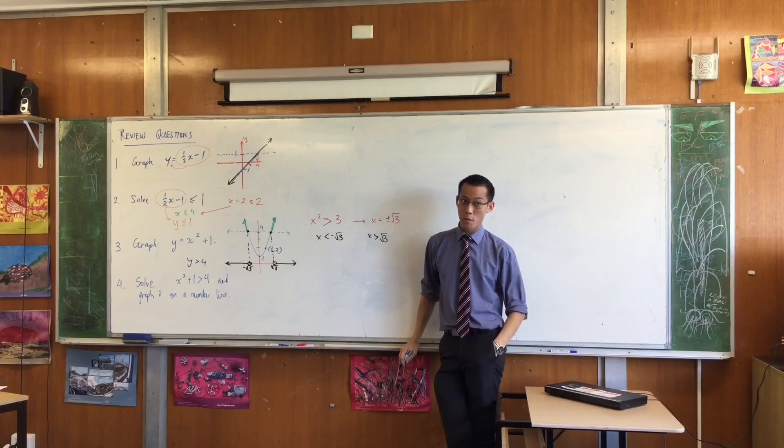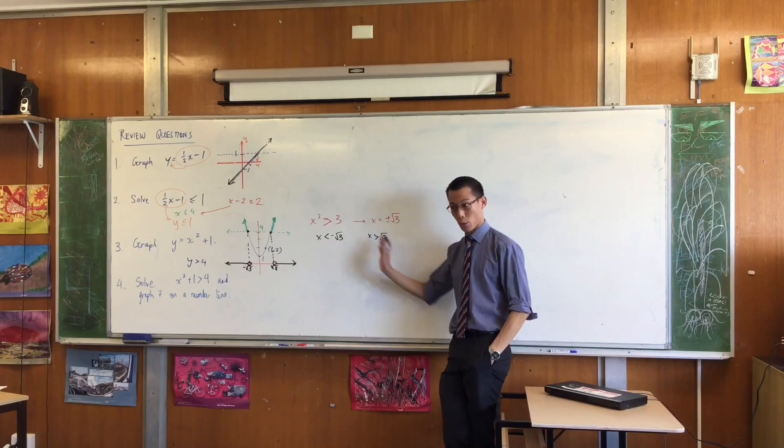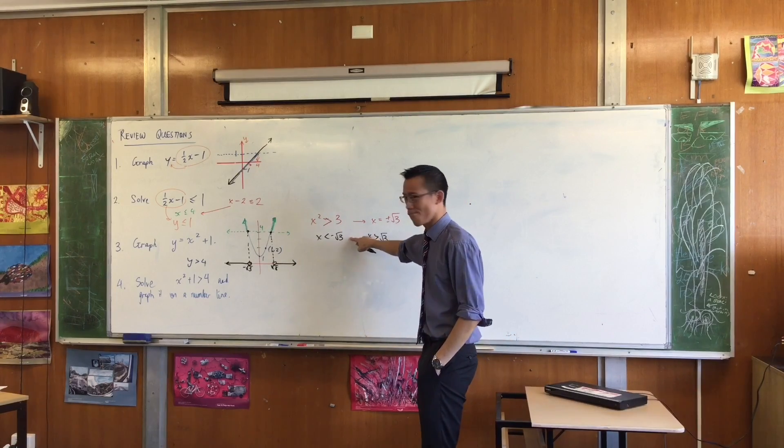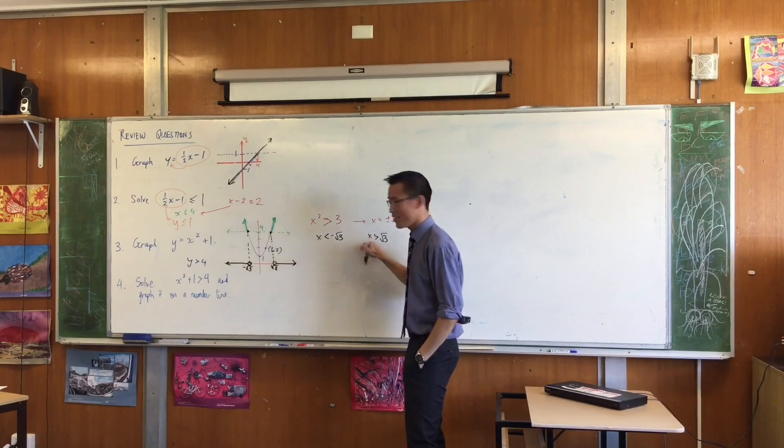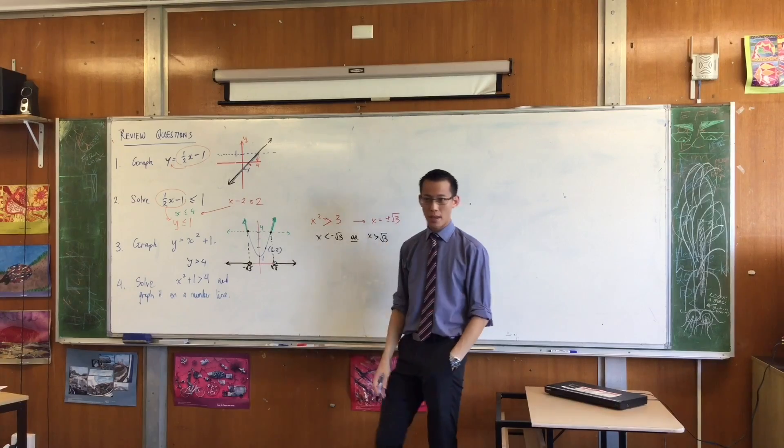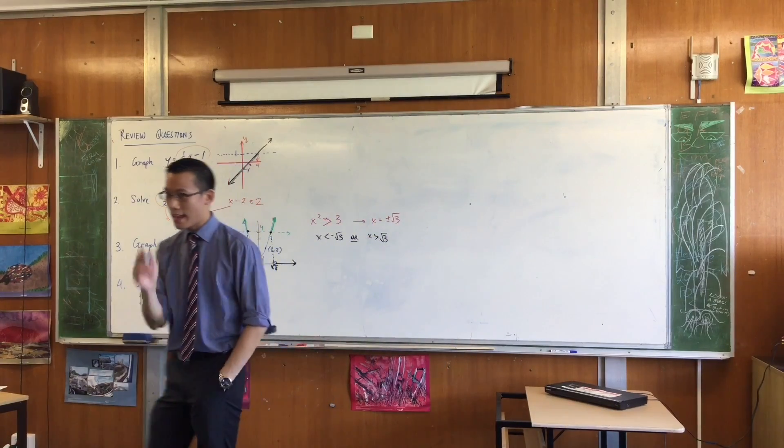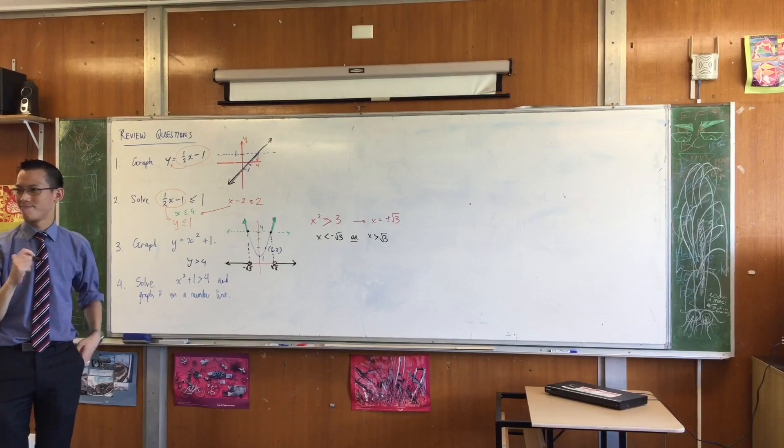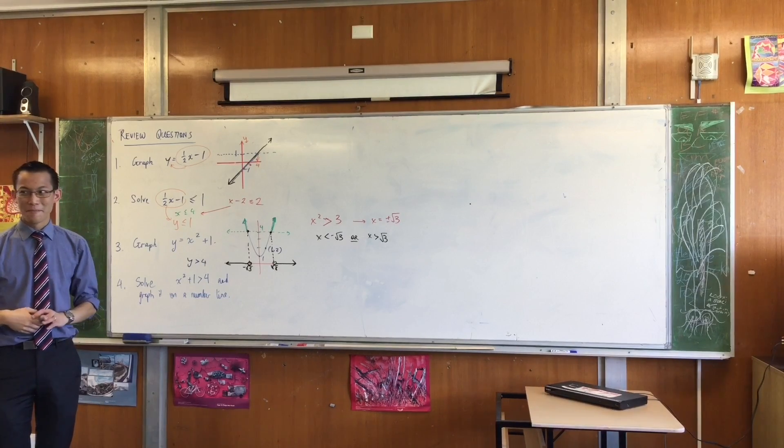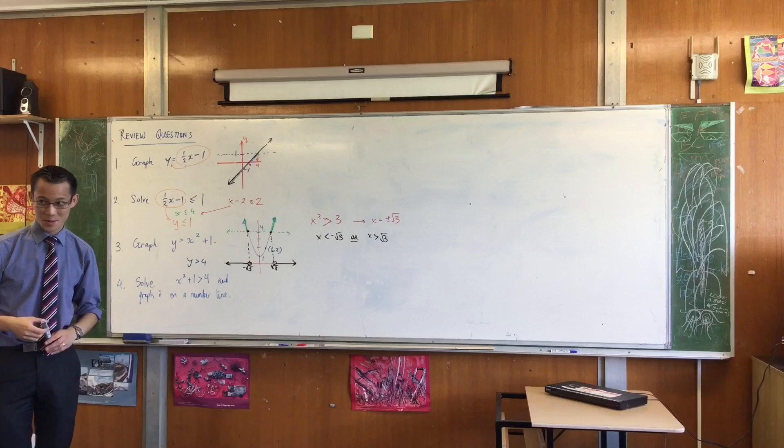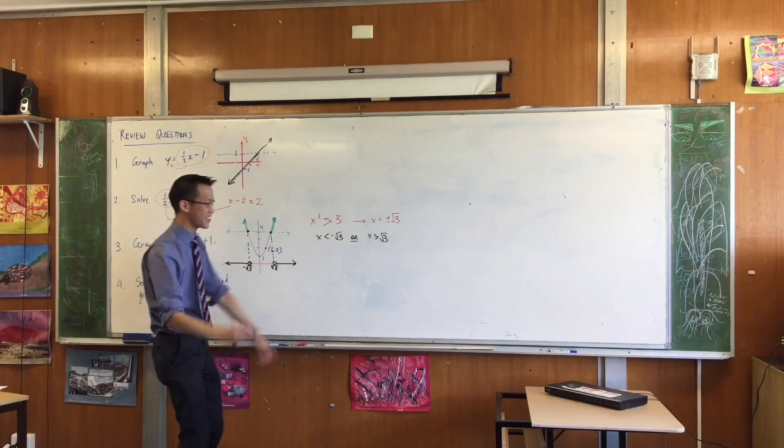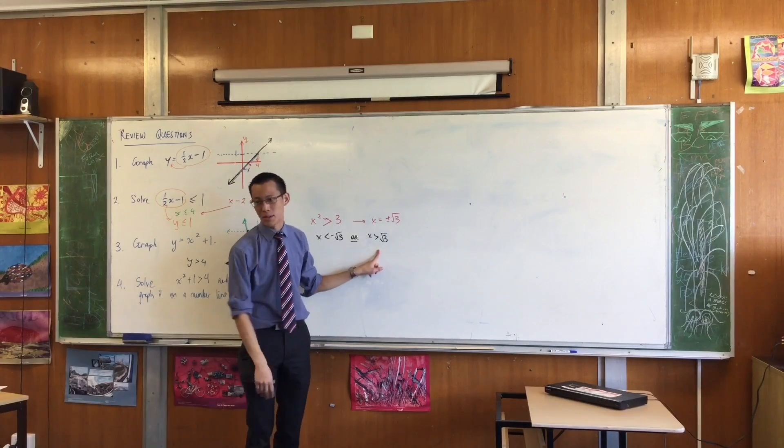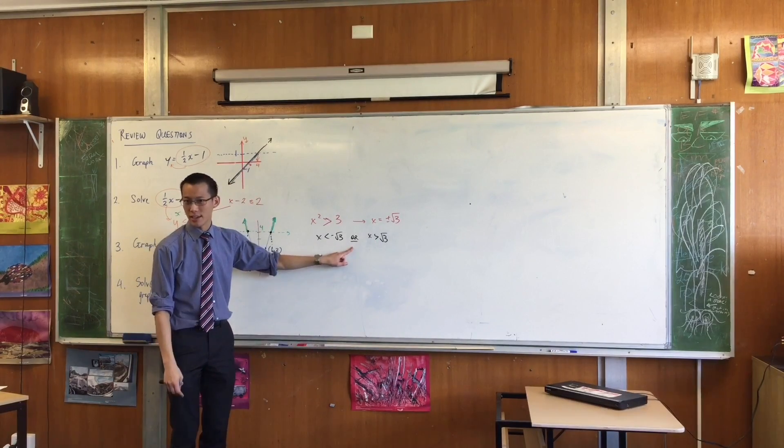Now remember I talked to you a little bit before about words that go between things? What word goes in here? I'm going to suggest the most helpful word is or. The most dangerous word is and. Why can't I use the word and? Because there isn't a number that is simultaneously less than negative root 3 and also greater than root 3 at the same time. So we can't use and in this case.